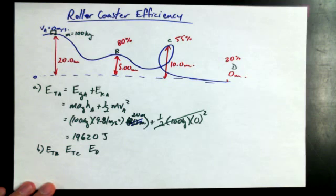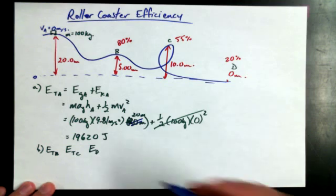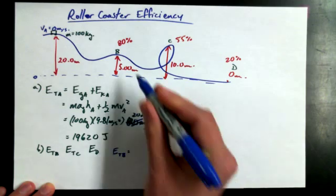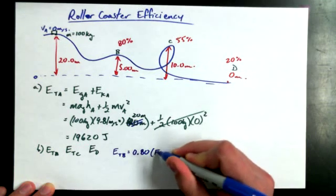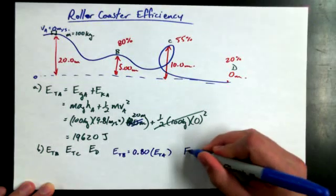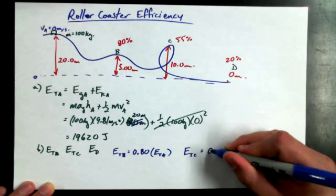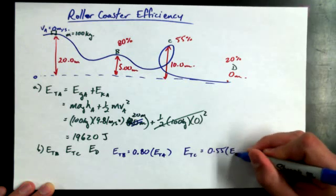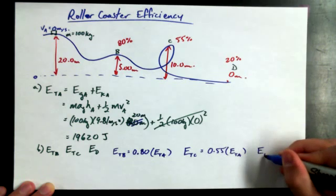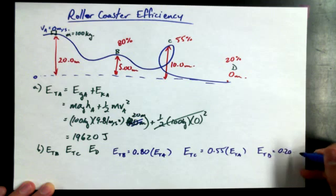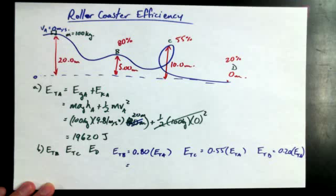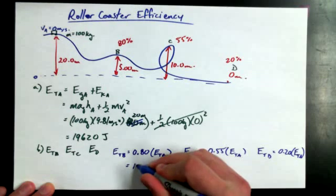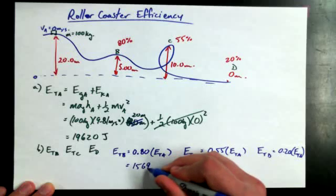Convert them into decimals and multiply it by the energy of A. Yeah, I like it. So I could say, E total at point B would be, converted into decimals, means the percentage, 0.80 times ETA. And 0.8 times 19,620 is 15,696 joules.